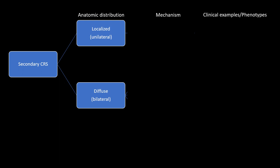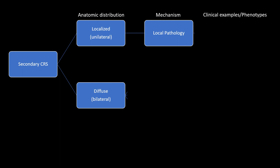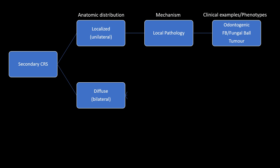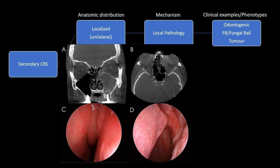Moving on to secondary CRS — once again described as localized or diffuse. Localized means there is some local pathology causing the sinus disease, such as dental infection, foreign body, fungal ball, or tumor. Here we see a person with a periapical abscess of a tooth that's already had endodontic treatment, with purulent edema within the middle meatus. Part A shows the periapical abscess and part B shows it's very anatomically restricted. This is classic odontogenic sinusitis — many of these patients improve by treating the tooth alone, though some need a combination of simple surgery plus dental intervention. It is not primary CRS; it is a secondary disorder.